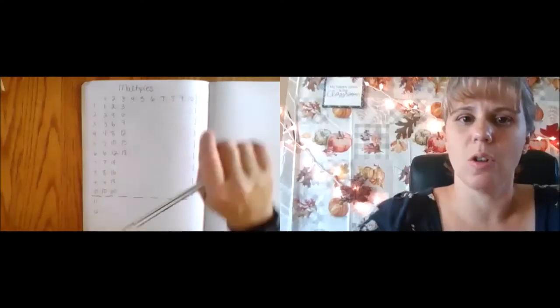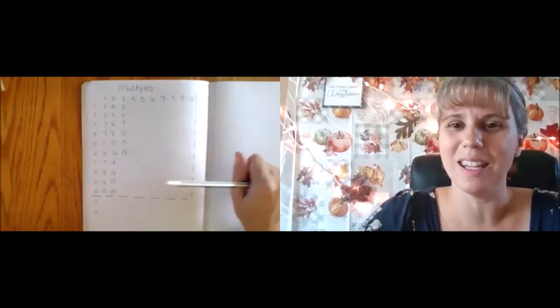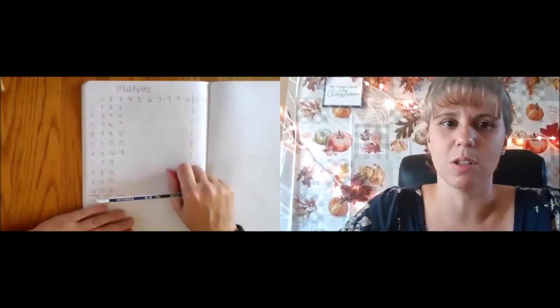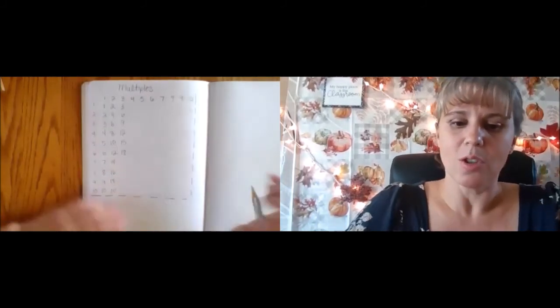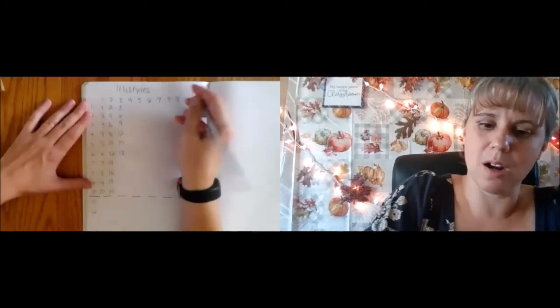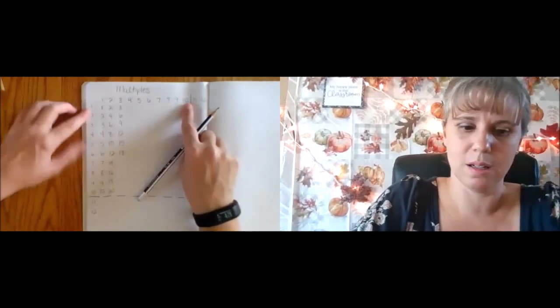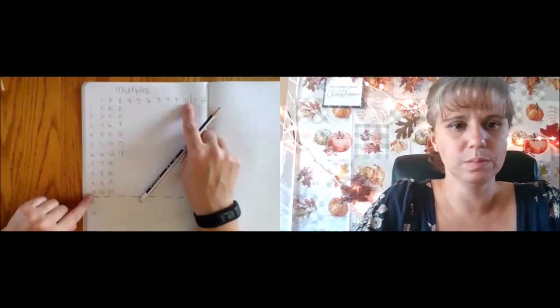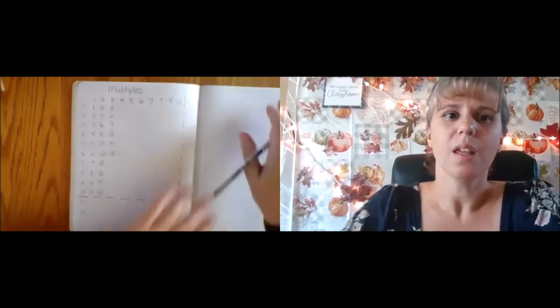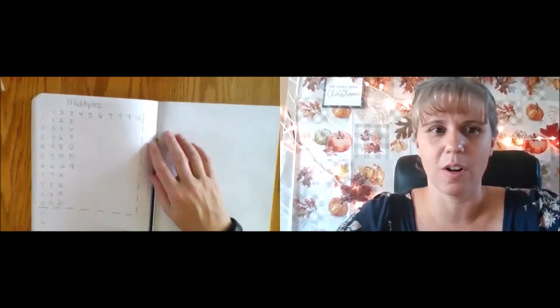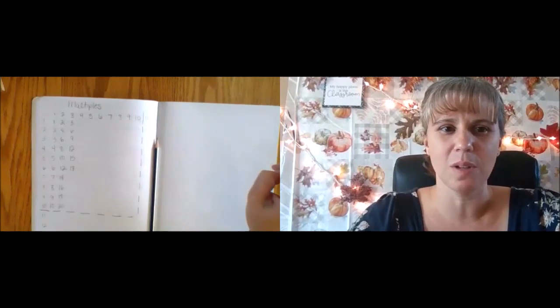You will be making your own multiples table in your journal that you can use as a resource and refer back to. So your follow up, if you're a fourth grader, is to do one through 10 by one through 10. And if you're a fifth or sixth grader, add in the 11 and 12. Make sure you take a picture of your journal page and share it back to me in your assignment page. I can't wait to see all the work that you do. Let me know how it goes. Thank you.